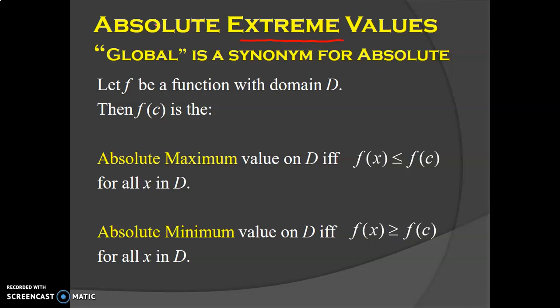When we talk about absolute extrema, 'global' is just another word for 'absolute.' So the absolute maximum is just the highest point on your graph. The absolute minimum is the lowest point on your graph. And both of these — anytime you're talking about an extrema — it must be a finite value. So you can't say that your extremum is positive infinity, negative infinity, or 1.9999... repeating. That's not a finite value.